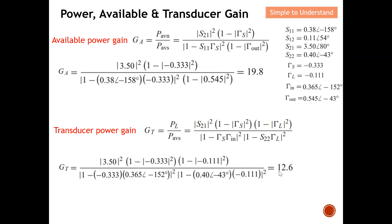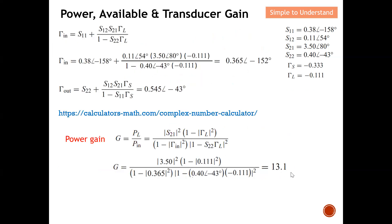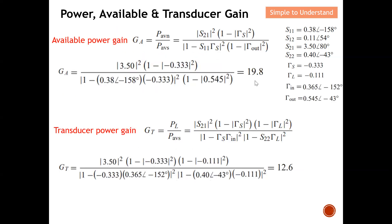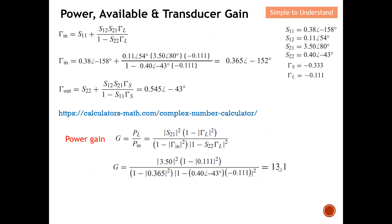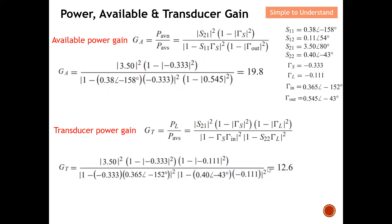In a quick comparison: the available power gain GA = 19.8 is the largest. The power gain G = 13.1 is second, and the transduction power gain GT = 12.6 is the smallest — the worst-case scenario. With this, I'd like to end the discussion. Please like and subscribe — thank you so much for your support. Hope to see you soon!